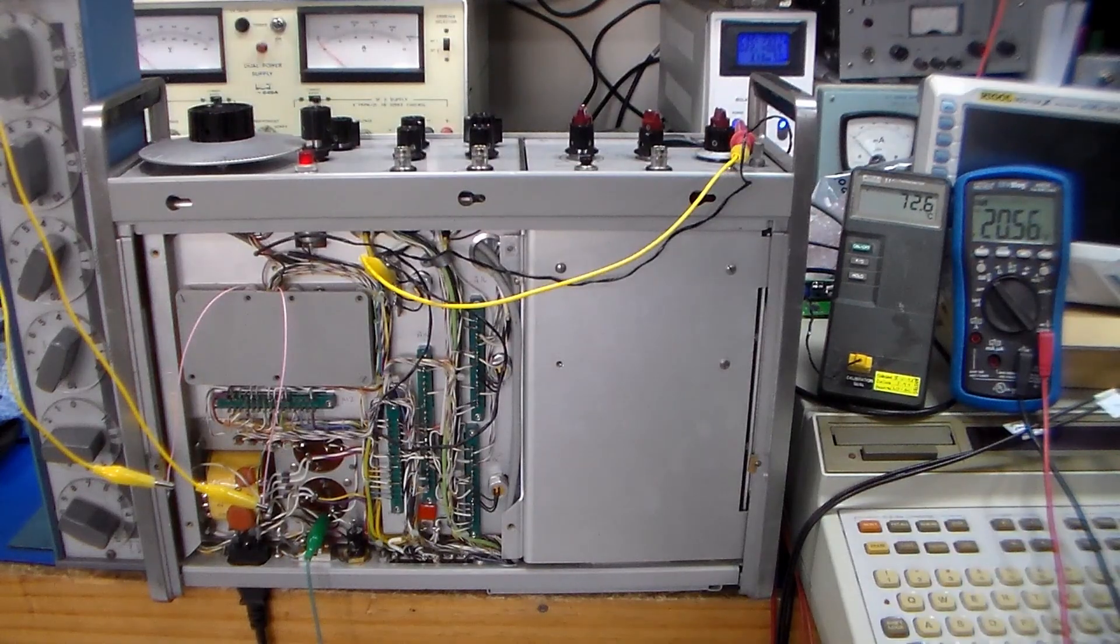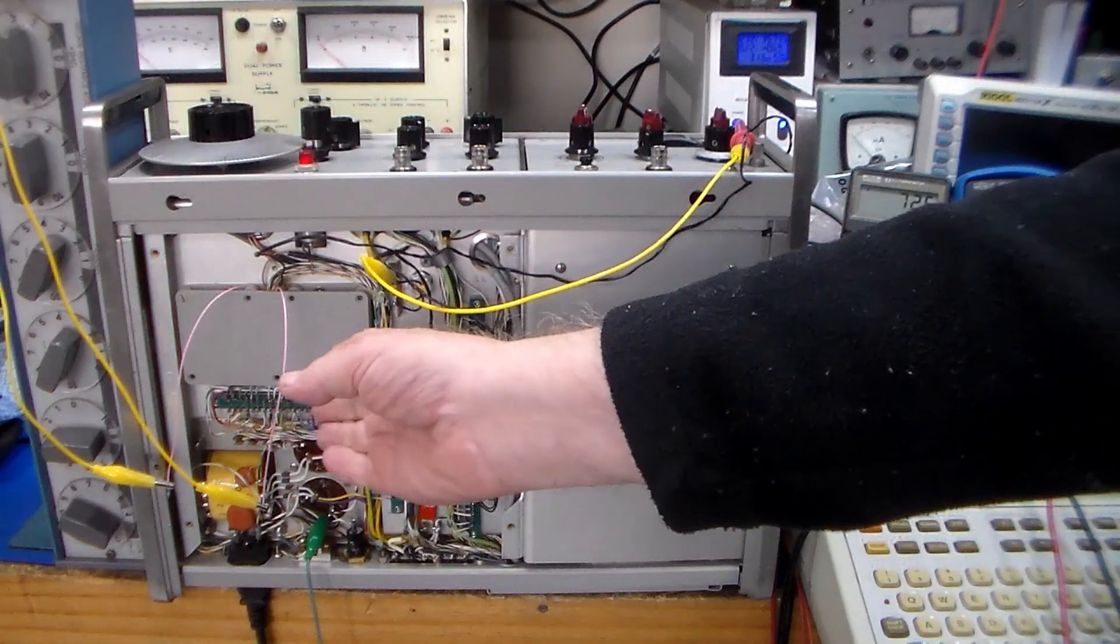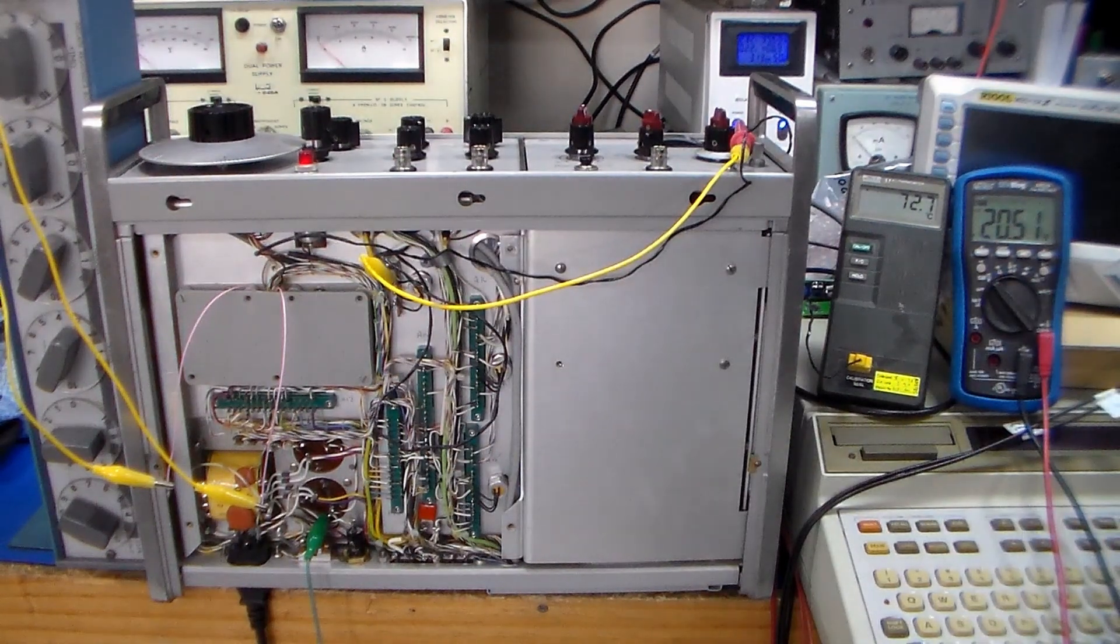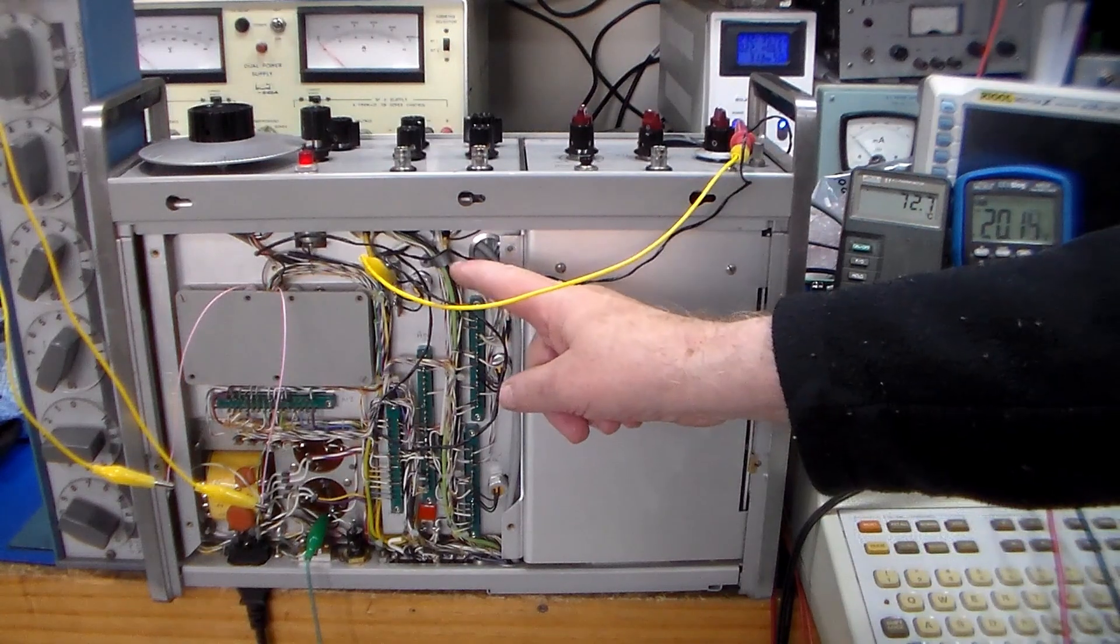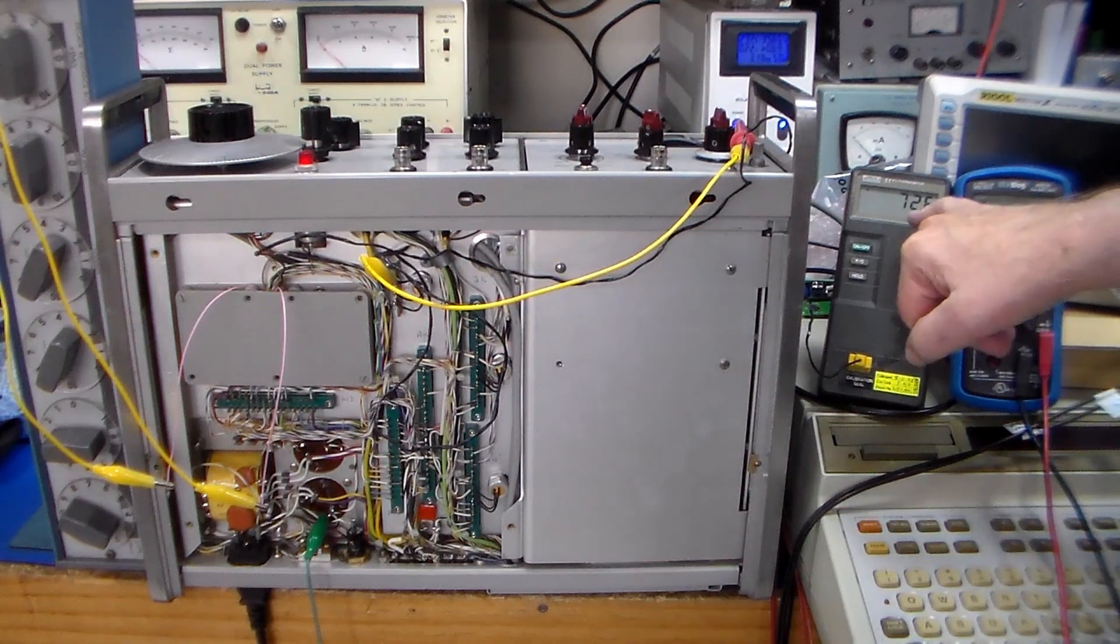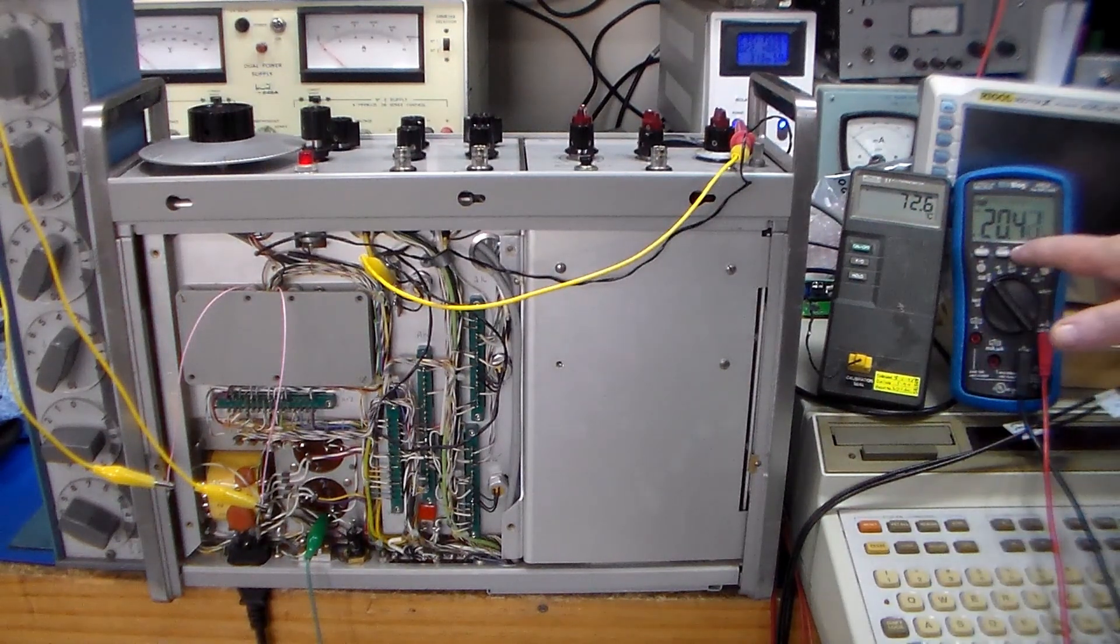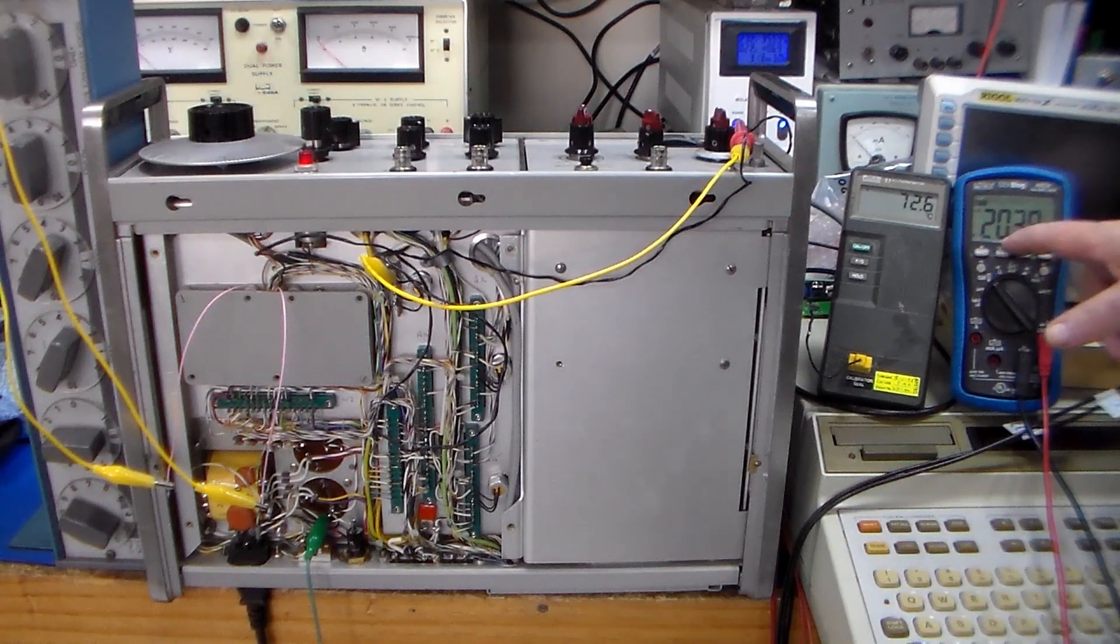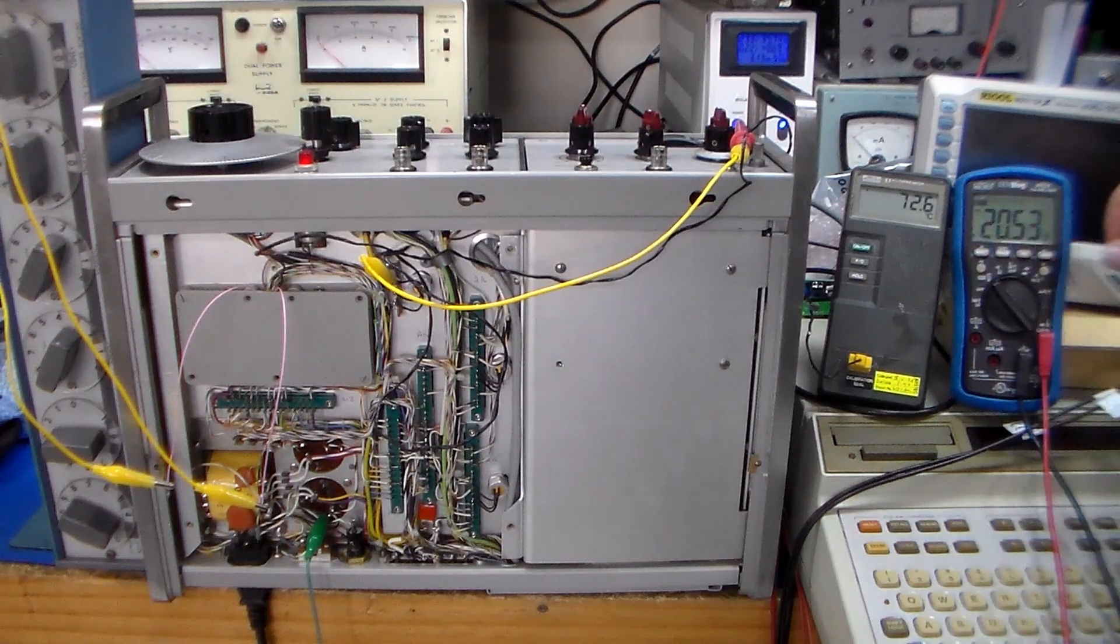Now, with the decade box set up over here going into the oven replacing R17 and monitoring the collector of Q7 we have 72.6 degrees C and the voltage at the collector of the oven heater element drive Q7 is 20.5 volts.